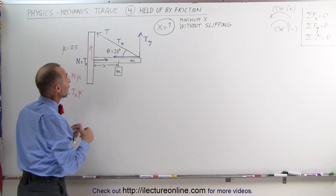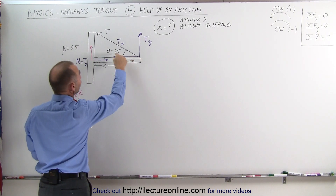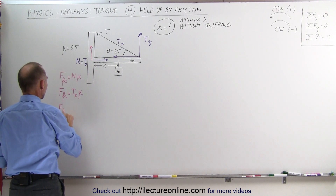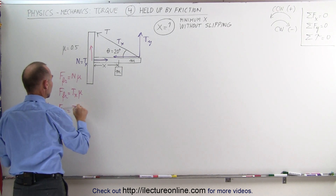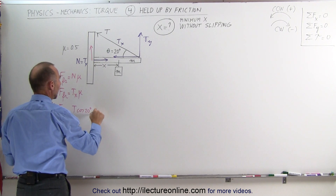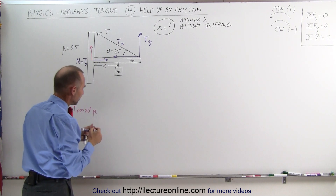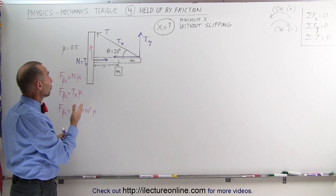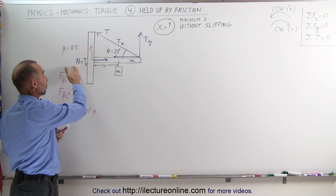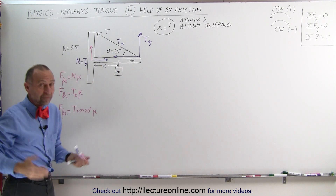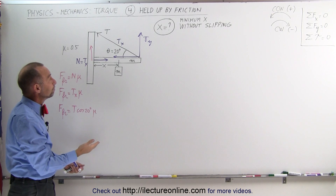To find the friction force we need the normal force; to find the normal force we need T_x; to find T_x we need the tension. Knowing that the angle is 20 degrees, the friction force equals the tension times the cosine of 20 degrees times mu. To find the tension we have to use the torque method.